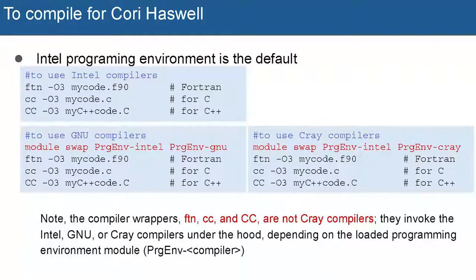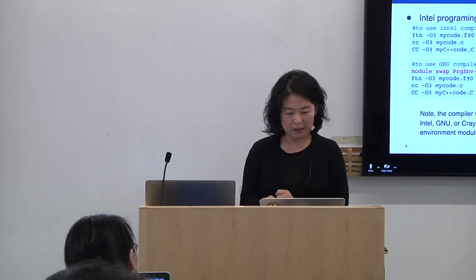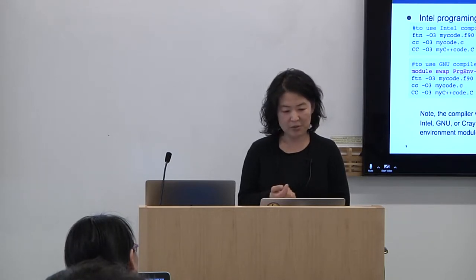If you want to use the GNU compiler, before you compile, you just run module swap to swap the programming environment module. Then you will use the GNU compiler and all the libraries built with the GNU compiler. That's what we do on Haswell.